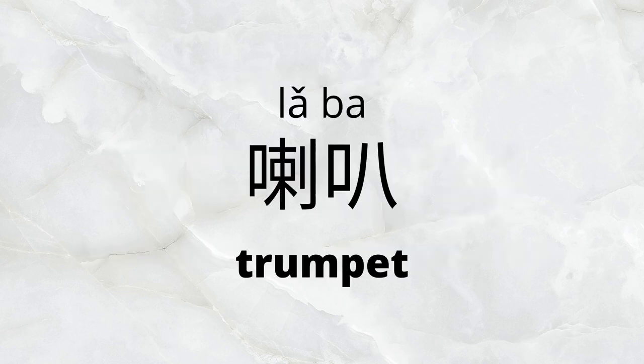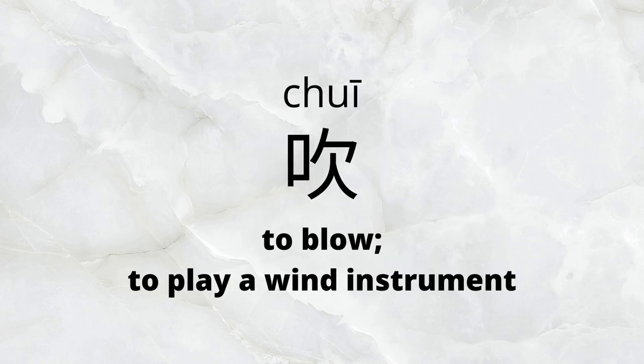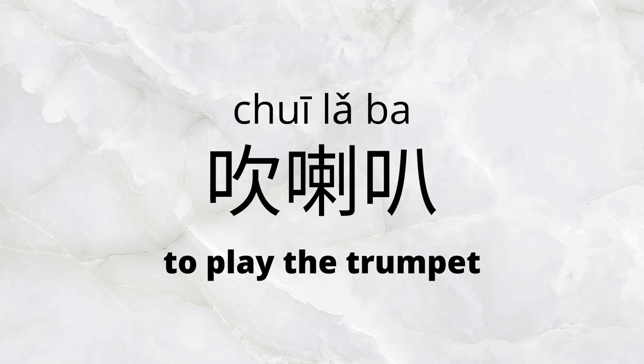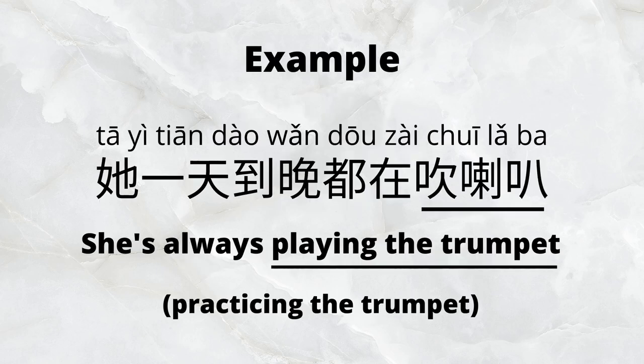The final instrument we'll go over is 喇叭, a trumpet. The verb we'll use here is 吹, which means to blow or to play a wind instrument. 吹喇叭 is then to play the trumpet. Our example is 她一天到晚都在吹喇叭.